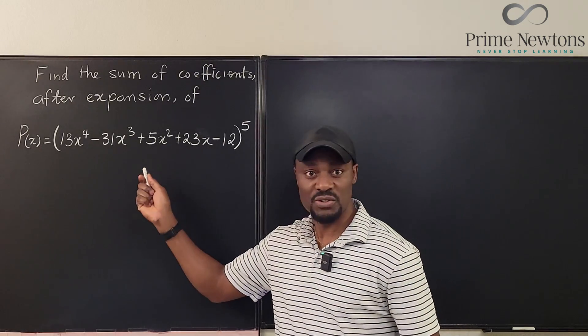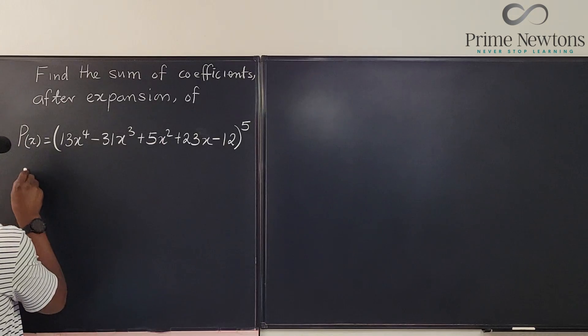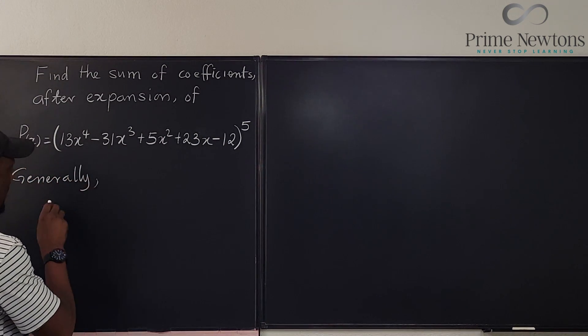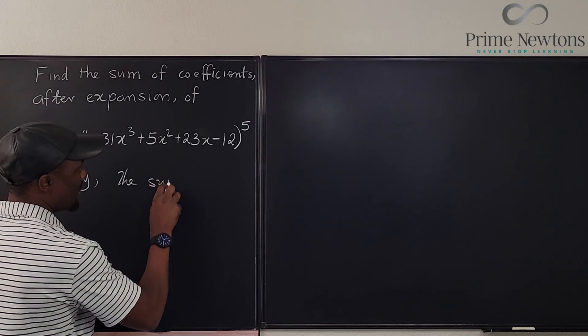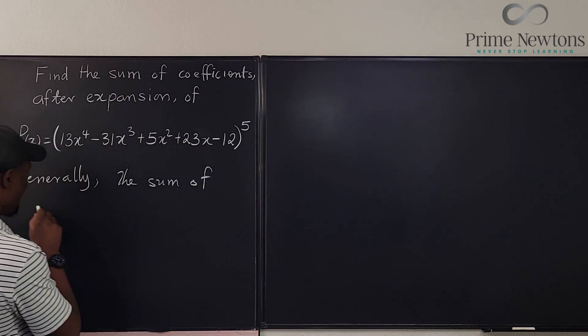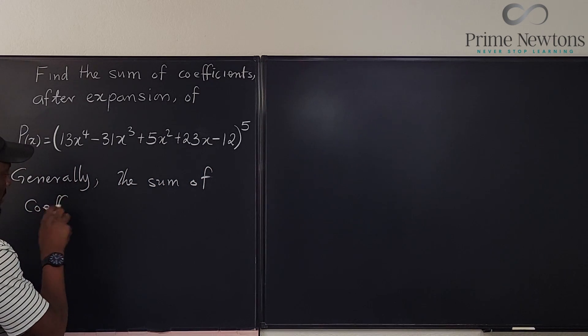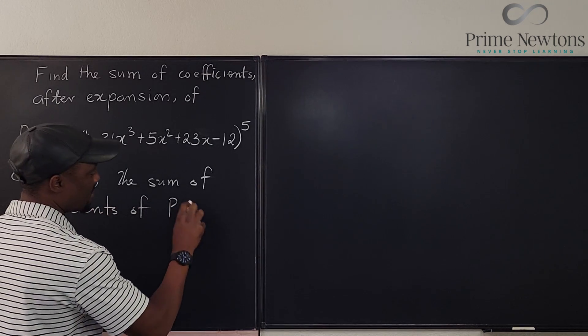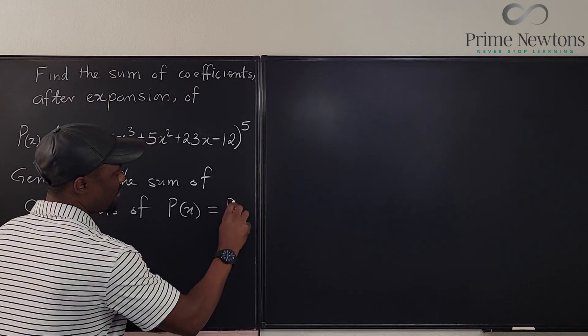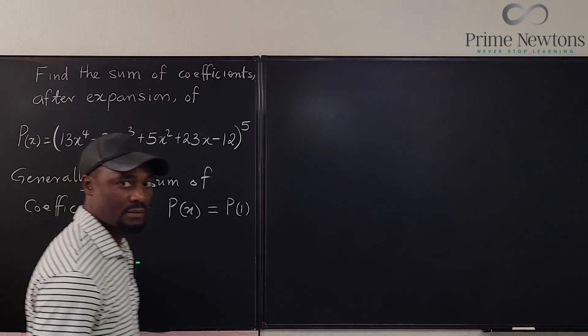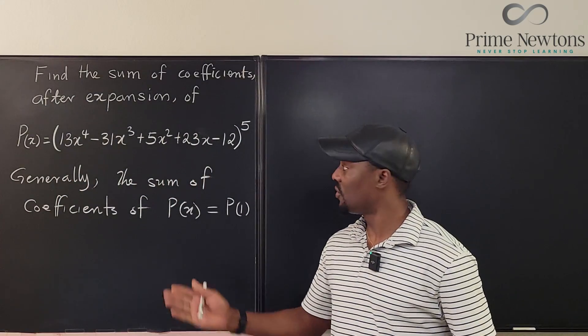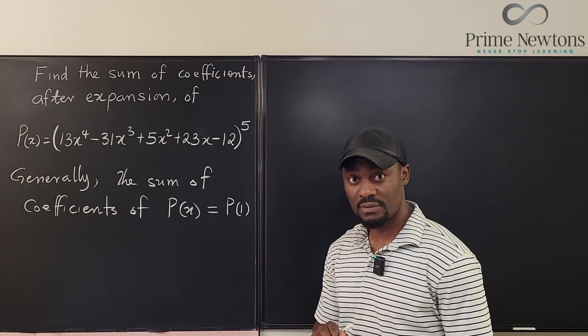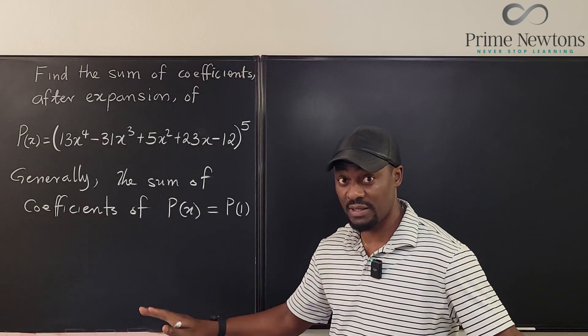So the answer to this problem, we can say generally the sum of coefficients of P of X equals P of one. That's it. Just plug in one. So the answer to this question is what you get when you plug in one. So we're going to plug in one and get our answer. And that's it.